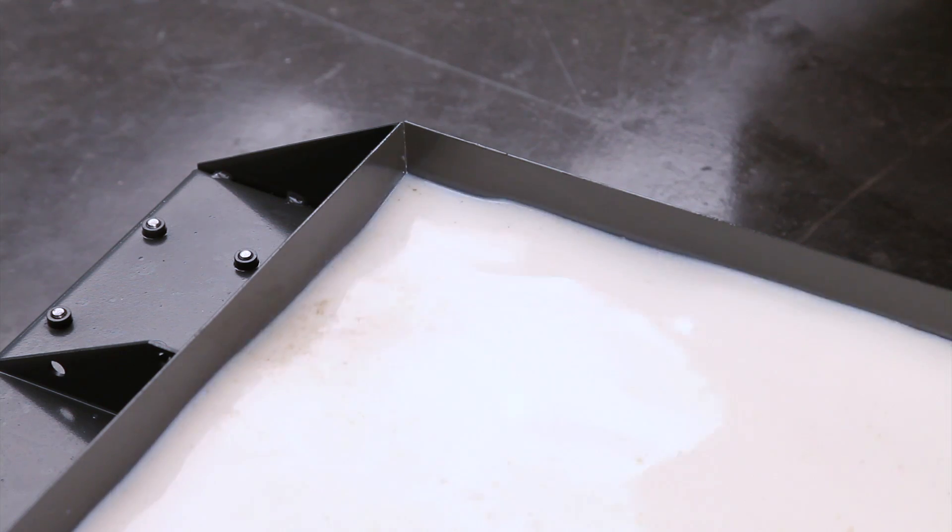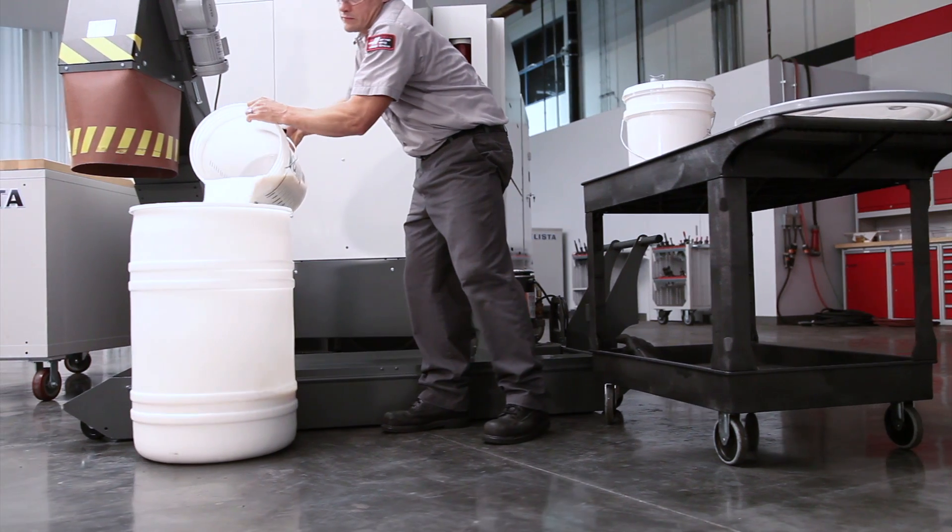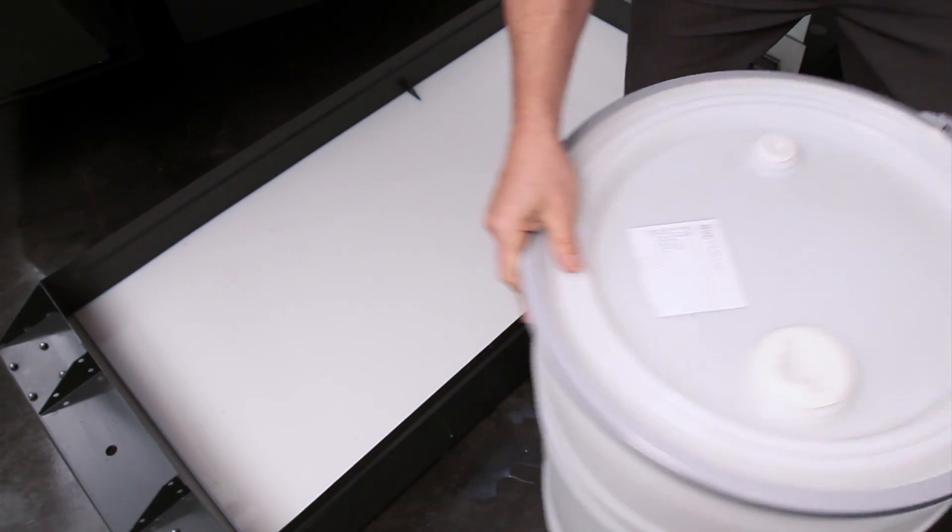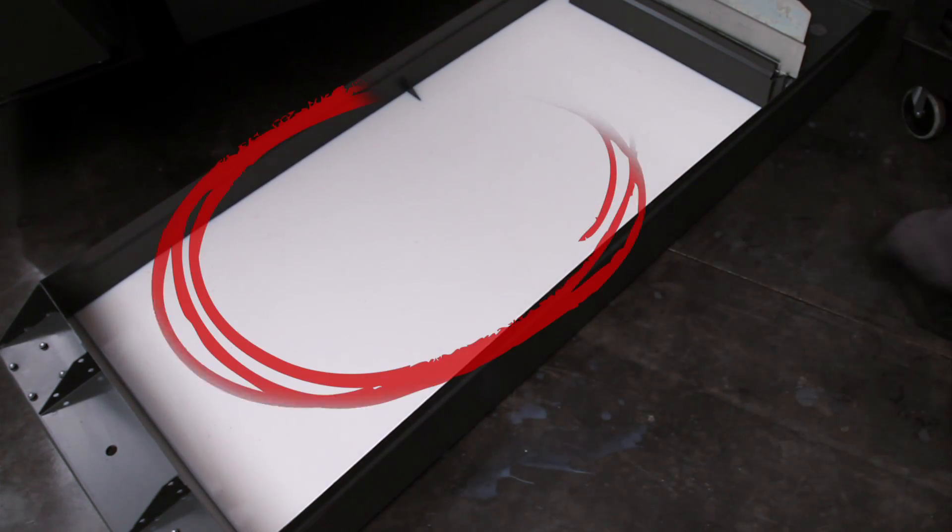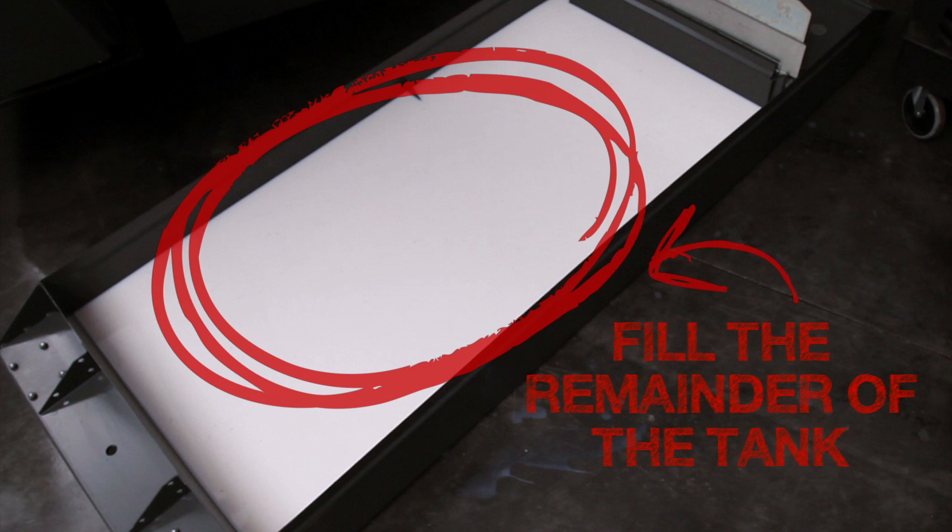So for our 16% tank that we have here, just as we showed in the graphic, we remove coolant until half full, setting aside the rich coolant for later. Now all that's left to do is fill the remainder of the tank.